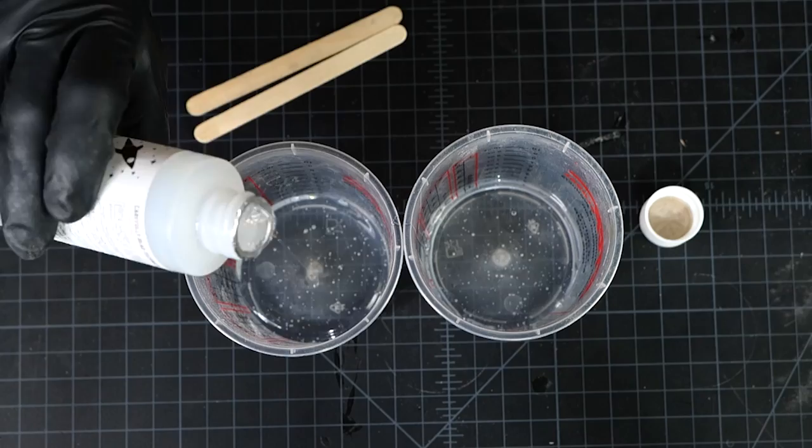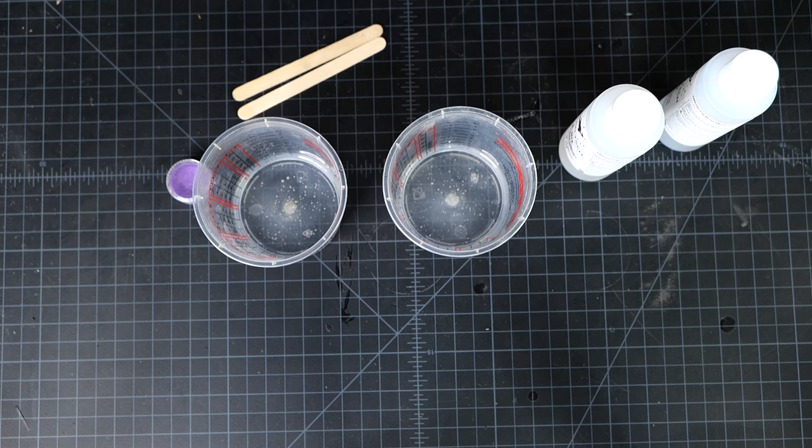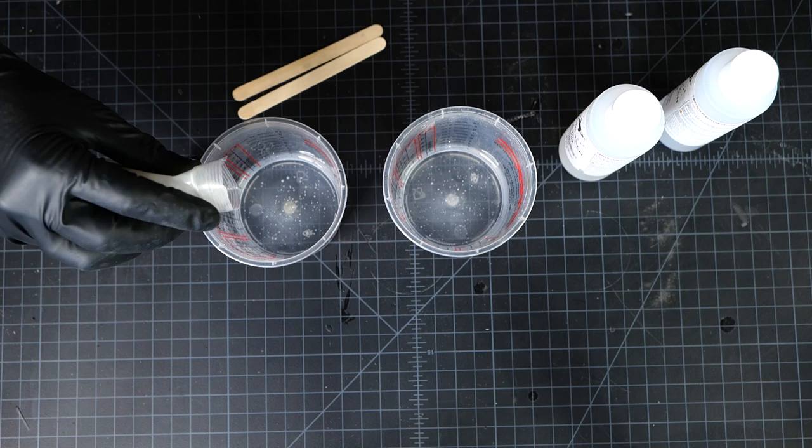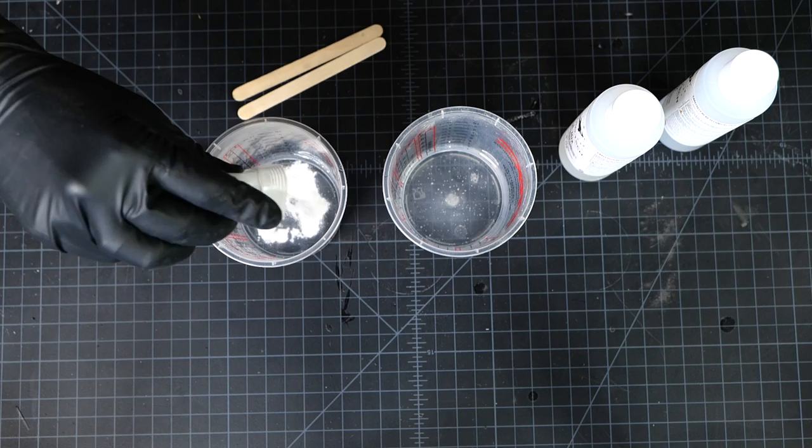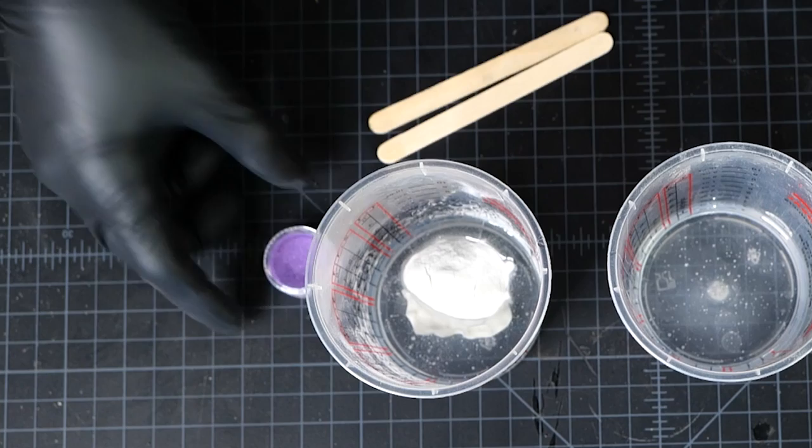All right, I've got resin all measured out. I'm going to go ahead and add purple glow powder to this one. I've got two ounces of resin over here. I'm going to add glow powder until it goes to about two and a half ounces, so a half ounce volume-wise of the purple glow powder. And for the purple pigment, I'll just add a little bit and I'll add more as I go.